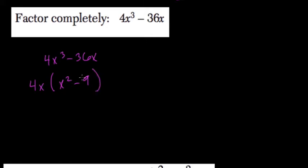Right? Because 4x times 9 is 36x. Now, x squared minus 9 is a difference of two squares. So you have x minus 3 times x plus 3.